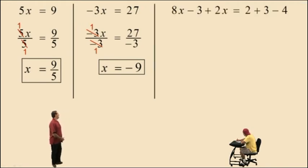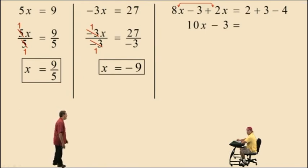Now, here we have 8x subtract 3 plus 2x equals 2 plus 3 subtract 4. Now, to begin solving this equation, we first want to combine like terms. And we have like terms on our left-hand side. We have the 8x plus the 2x, that's 10x, bring down the subtract 3. On the right-hand side, they're all numeric values, so we can combine those. We get 2 plus 3 is 5, subtract 4 is 1, and that's what you get on the right-hand side.